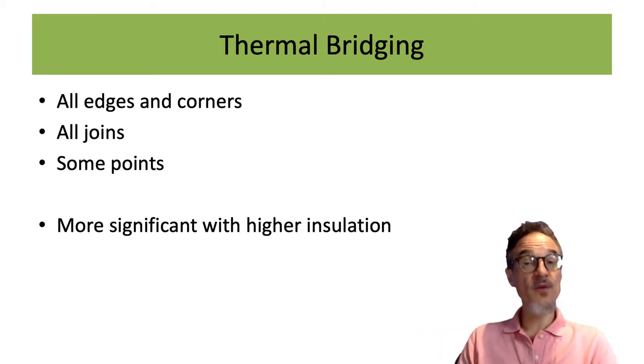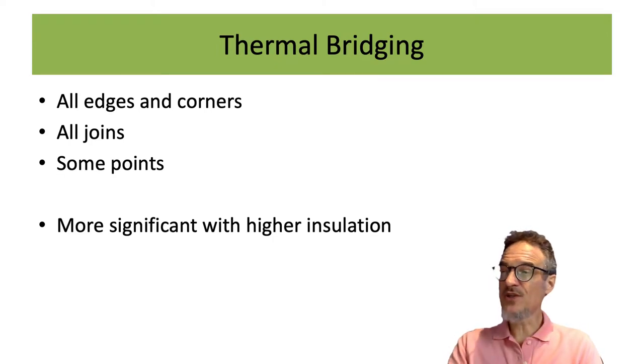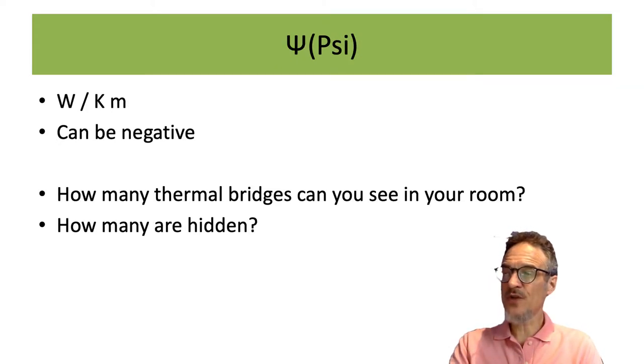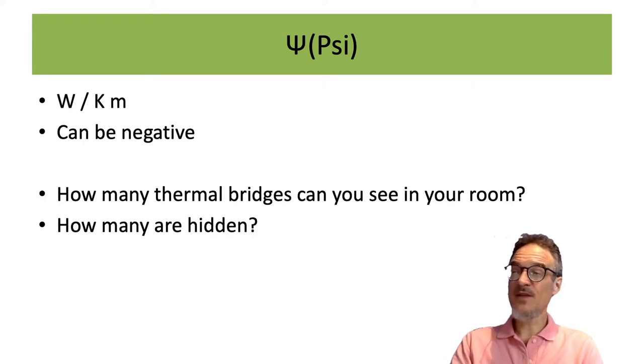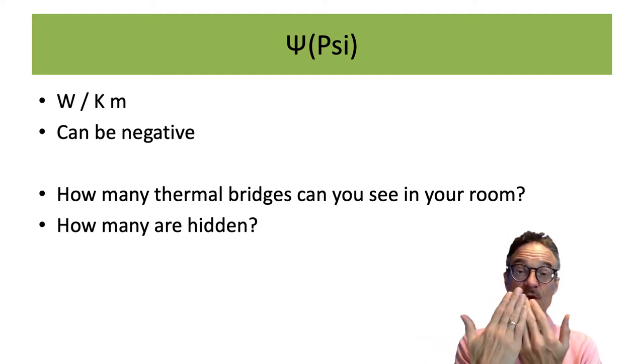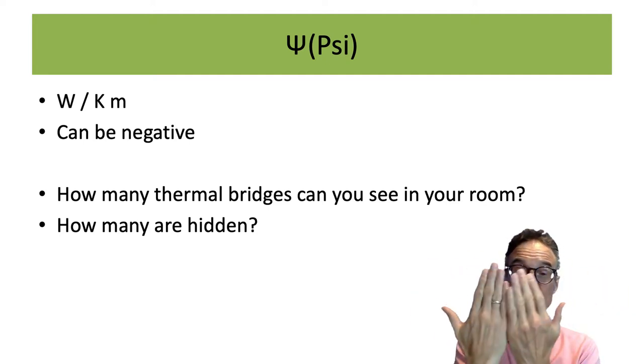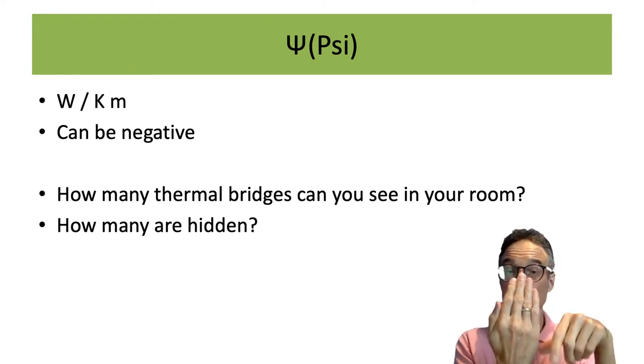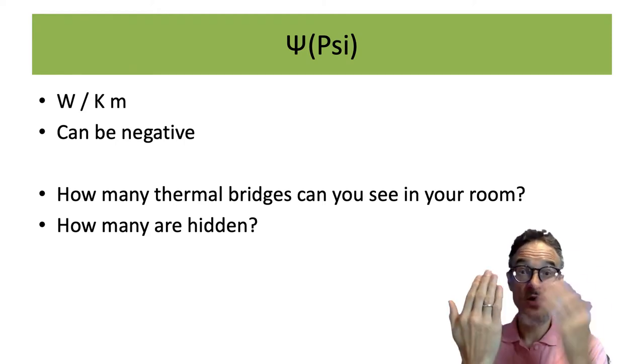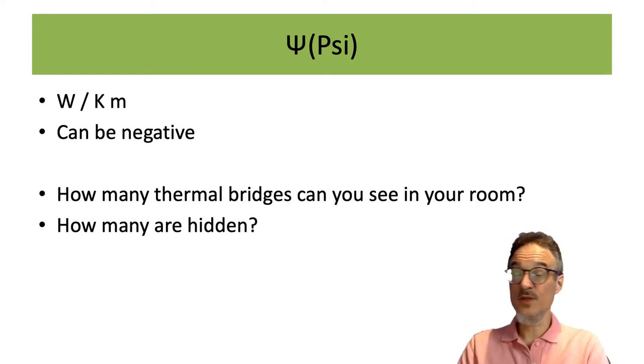So that's called thermal bridging. And it's usually measured with what's called a psi value, which is a Greek letter. It's measured in watts per Kelvin meter. So it's usually measured by length. It can be negative. So some wall structures, you can put together two different parts of a wall in such a way that the joint is better than either of the two bits of wall. It's usually not.